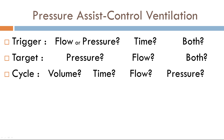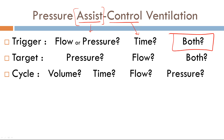This is an assist-control mode, meaning it's a hybrid mode — you can have assisted breaths and controlled breaths. For assisted breaths, the trigger variable is flow or pressure. For controlled breaths, the trigger variable is time. Since this is a hybrid mode, the trigger is going to be both.